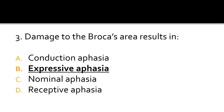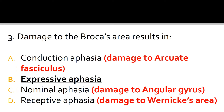Damage to the Broca's area results in expressive aphasia. Conduction aphasia is due to damage to the arcuate fasciculus. Nominal aphasia is due to damage to the angular gyrus, while receptive aphasia is due to damage to the Wernicke's area.